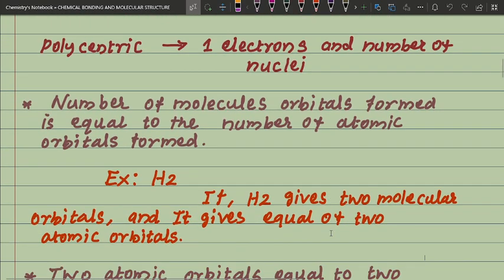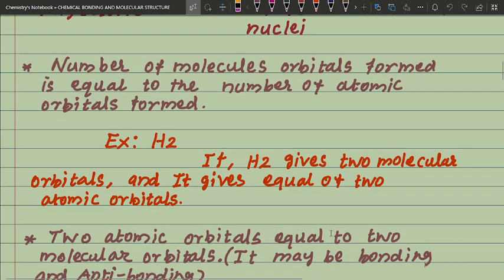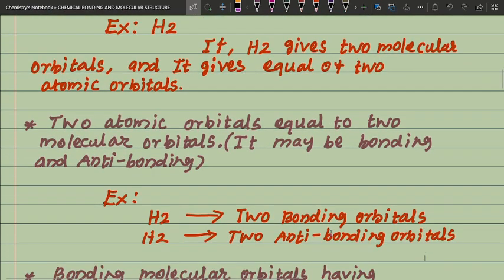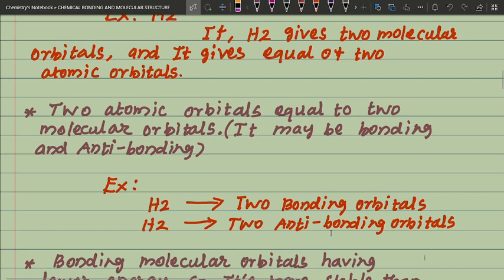The number of molecular orbitals formed is equal to the number of atomic orbitals combined. For example, the H2 molecule gives two molecular orbitals from two atomic orbitals. Two atomic orbitals combine to give two molecular orbitals — one bonding and one antibonding.